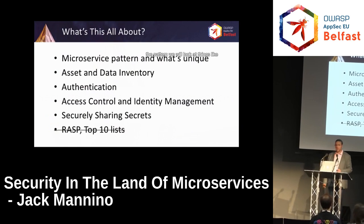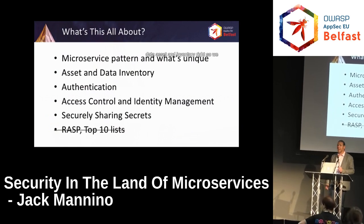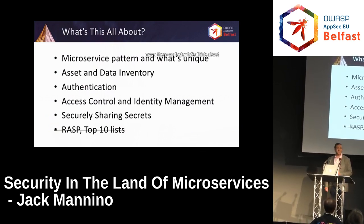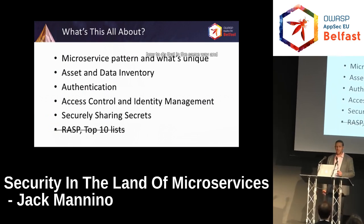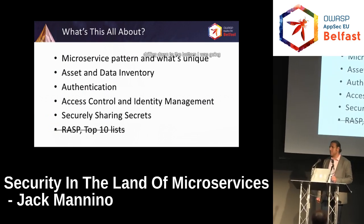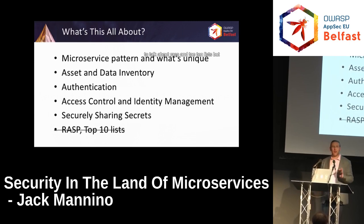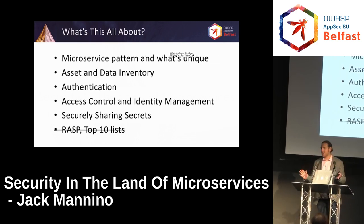So at a high level, the pattern — we'll look at things like data, asset, and inventory. We move a lot faster, so let's think about how to do that in a sane way. And drilling down to the bottom, I was going to talk about RASP and a top 10 list, but then I want to talk about security.